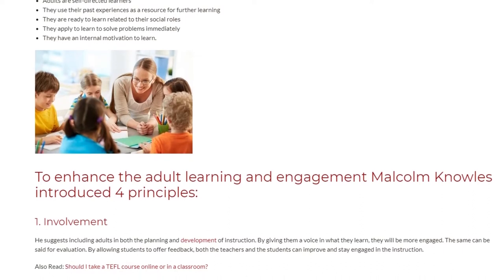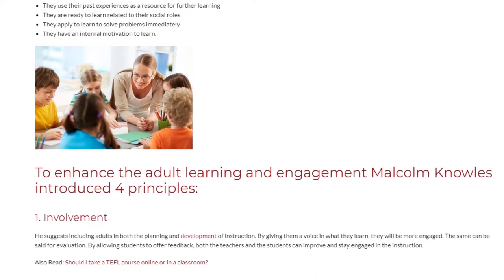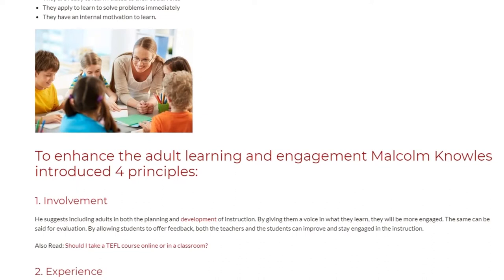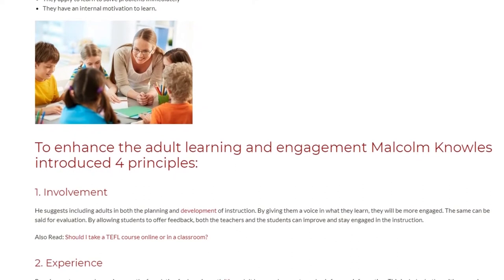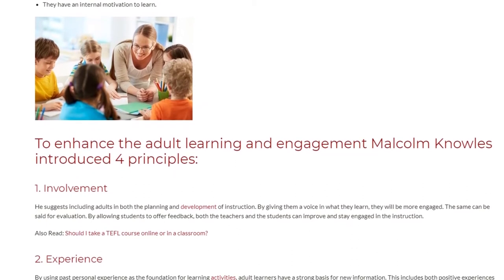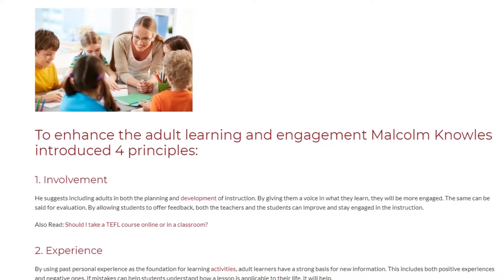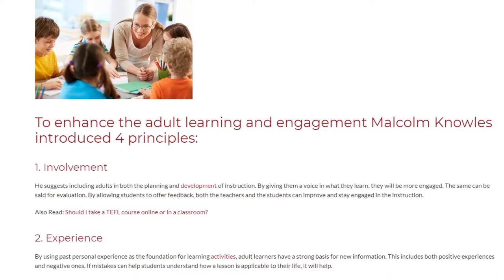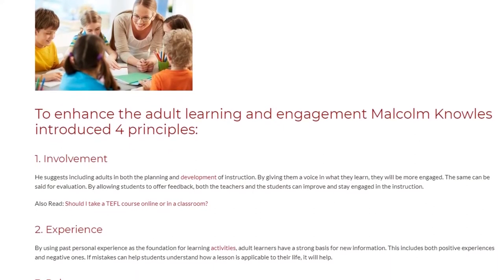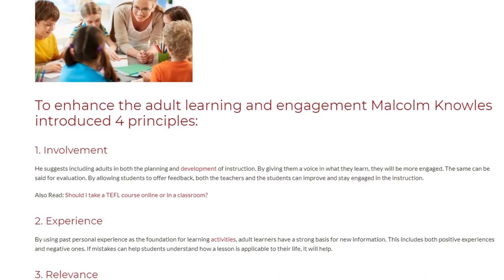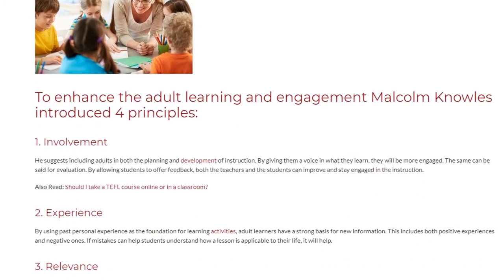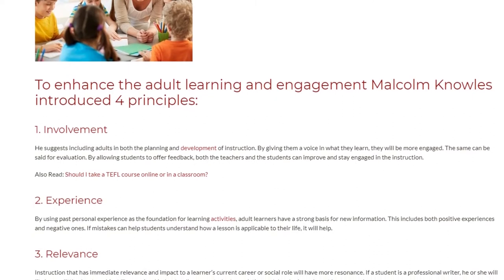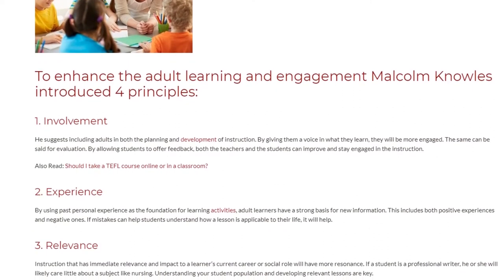To enhance adult learning and engagement, Malcolm Knowles introduced four principles. The first is involvement. He suggests including adults in both the planning and development of instruction. By giving them a voice in what they learn, they will be more engaged. The same can be said for evaluation — by allowing students to offer feedback, both teachers and students can improve and stay engaged in the instruction.